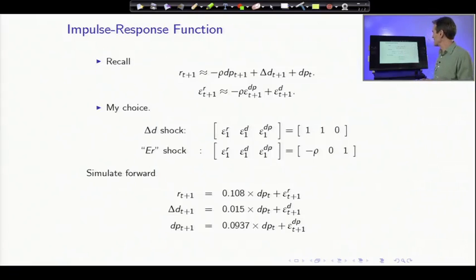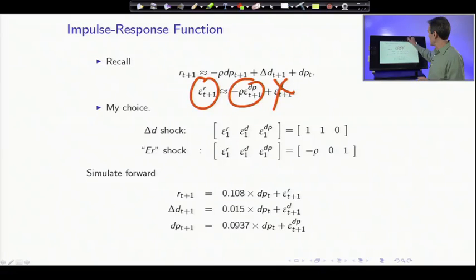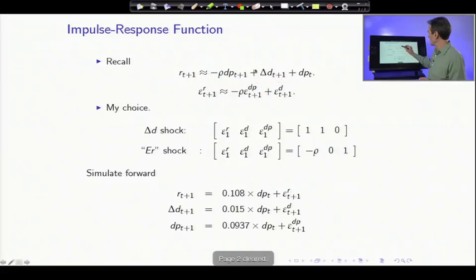My second shock will be an expected return shock, a dividend yield shock. That one moves dividend yield and return and leaves the dividend growth alone. Now because of the identity, there's a rho involved here. If the dividend yield goes up one, returns have to go down by rho.